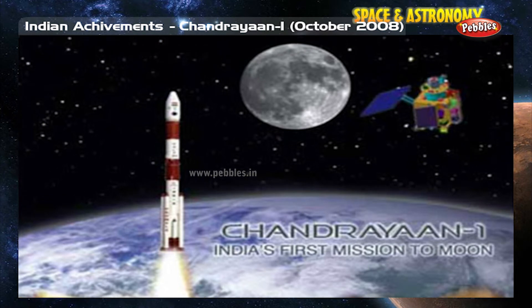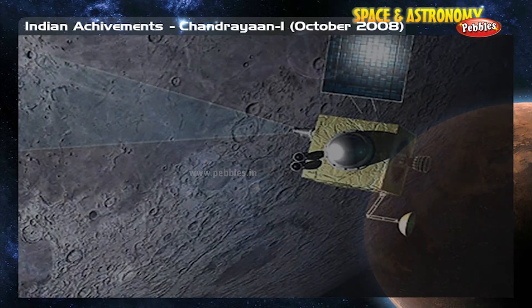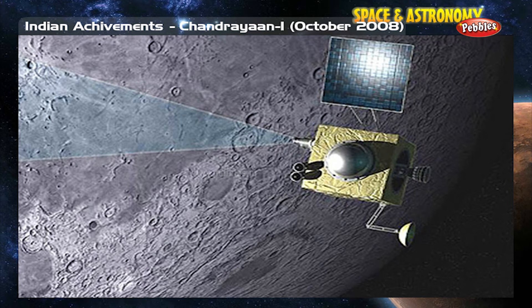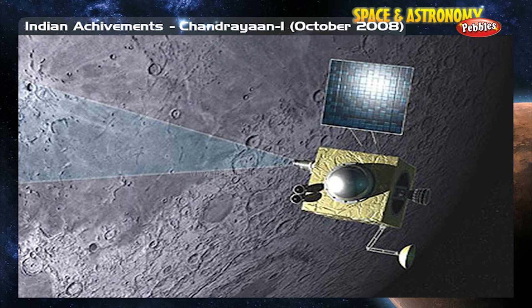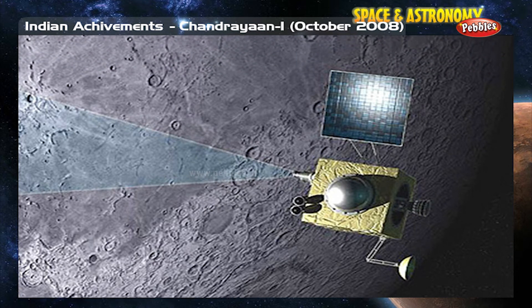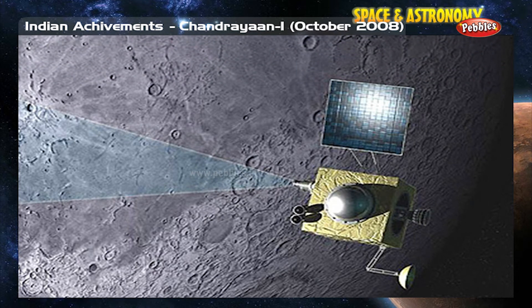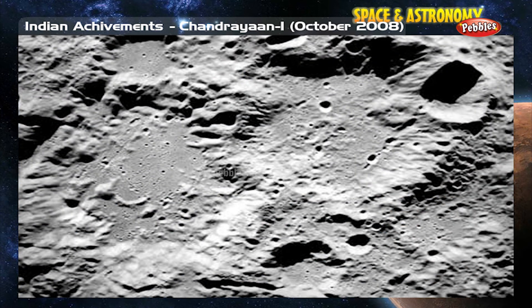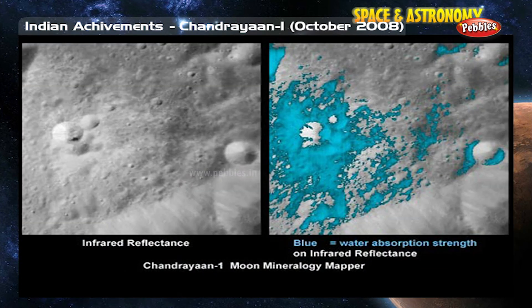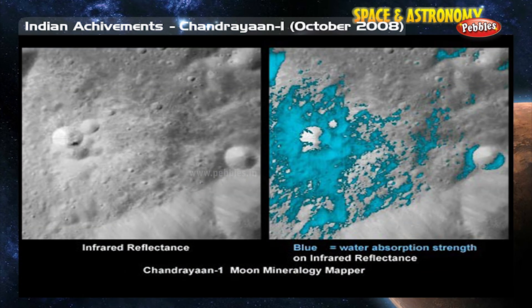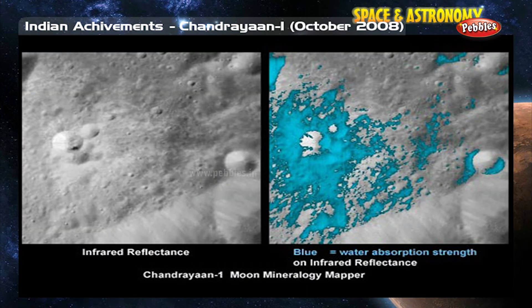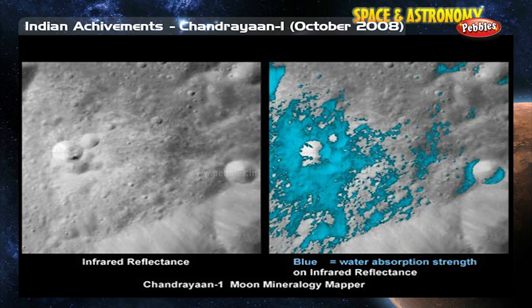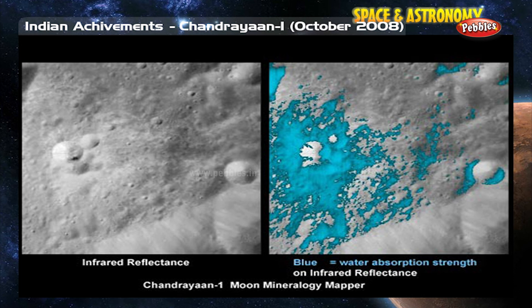Chandrayaan 1 is the first in this series and is an unmanned mission. Chandrayaan operated for 312 days as opposed to the intended two years, but the mission achieved 95% of its planned objectives. Among its many achievements was the discovery of the widespread presence of water molecules in lunar soil.